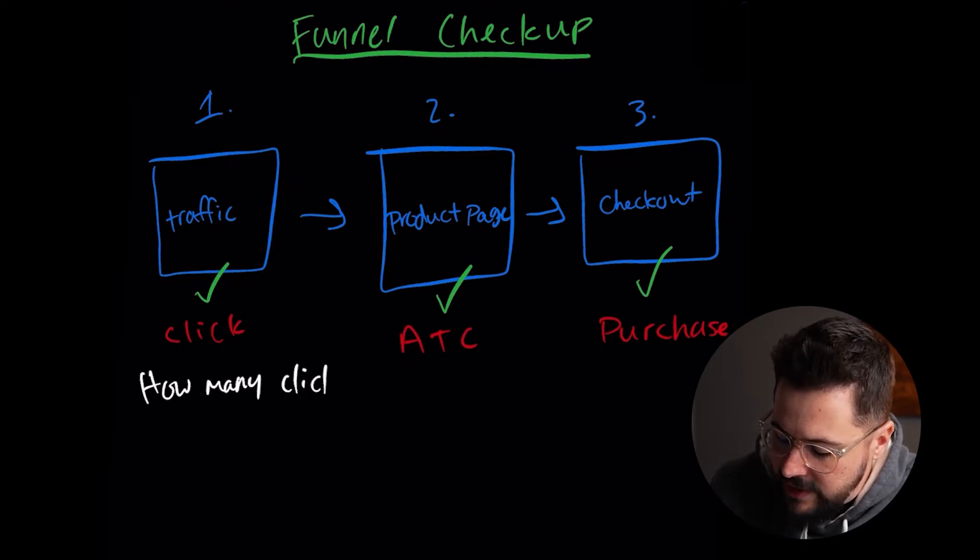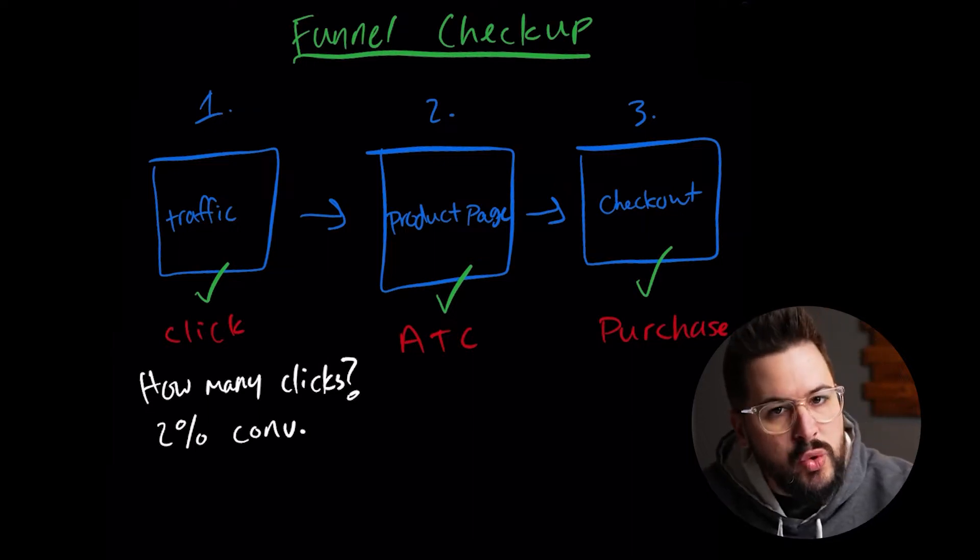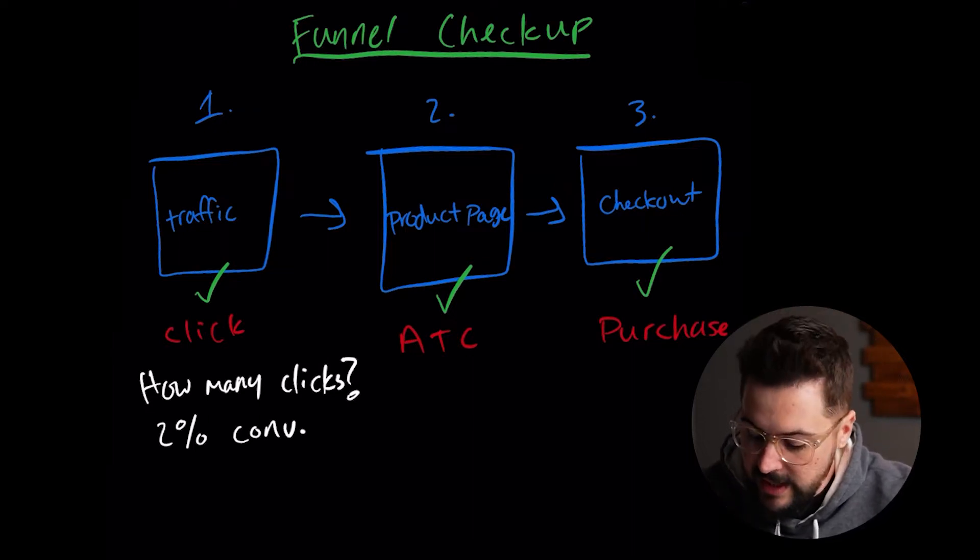The average Shopify store gets about 2% conversion, which means that two out of every hundred people should be buying. So the first question I want you to ask is how many clicks — because if you don't have at least 50 clicks in a 30-day period, there's no way you can really say whether your traffic is working or not, whether your ad is good or bad. You need quite a few clicks to say something is broken or not. I would recommend getting to at least 100 to 200 clicks before you really evaluate whether this is good or bad.